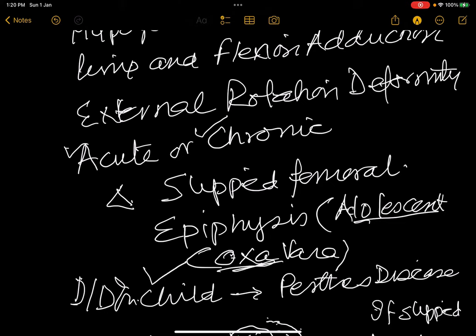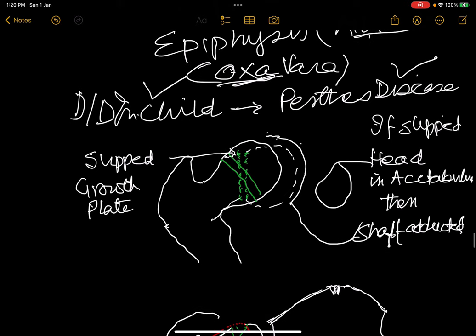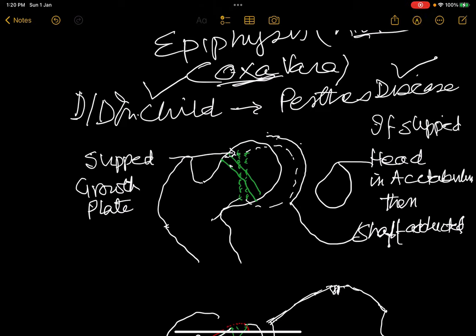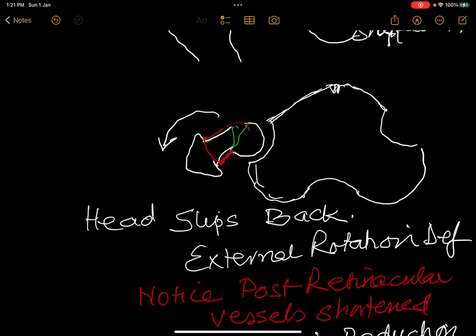In a child you could think of Perthes disease; in an adolescent you think of slipped femoral epiphysis. The growth plate has slipped — the head is in the acetabulum and the shaft is adducted, causing adduction deformity due to the downward slip of the head. Because of the backward slip there is an external rotation deformity.